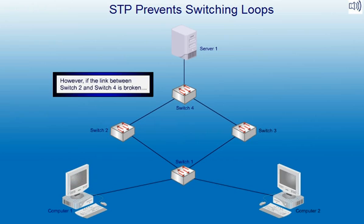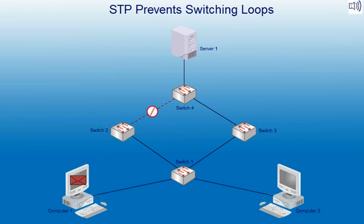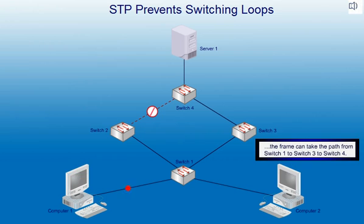However, if the link between Switch 2 and Switch 4 is broken, the frame can take the path from Switch 1 to Switch 3 to Switch 4.